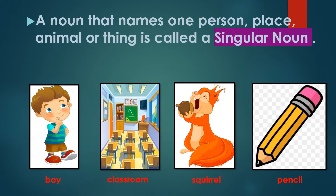Now in this picture, you can see there is one boy, a boy, a classroom, only one classroom, a squirrel, one squirrel and a pencil, one pencil.